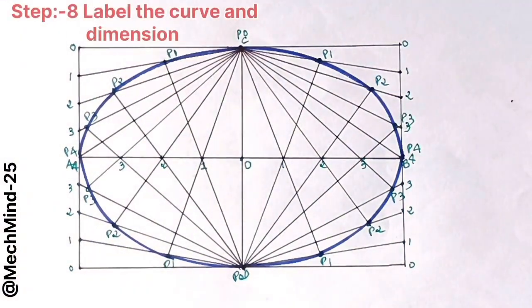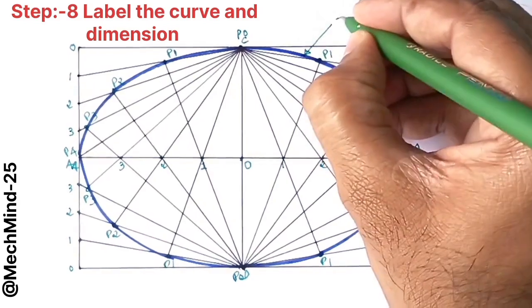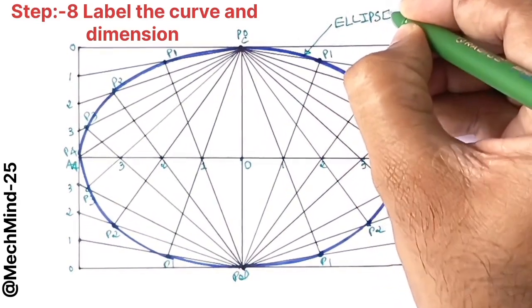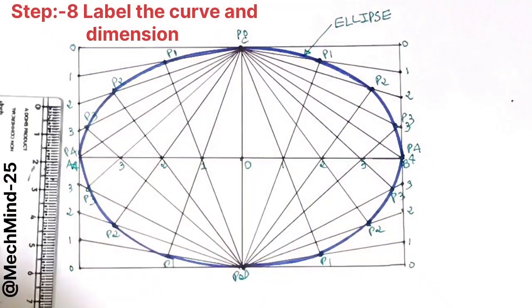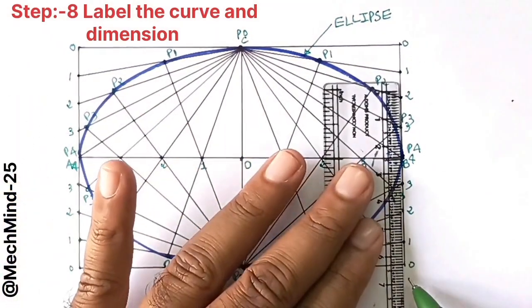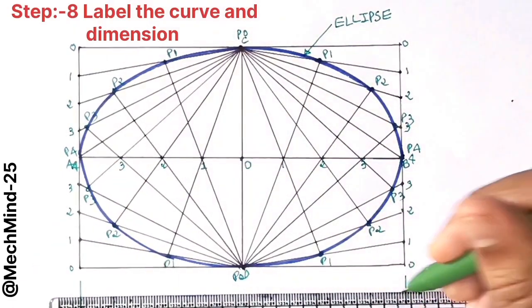Label the curve as ellipse. Next, specify the dimensions. Write the major axis equal to 120 mm and minor axis equal to 80 mm below the drawing.